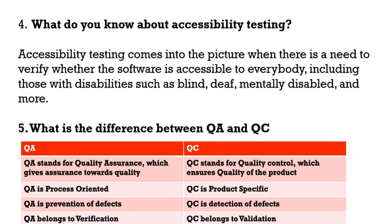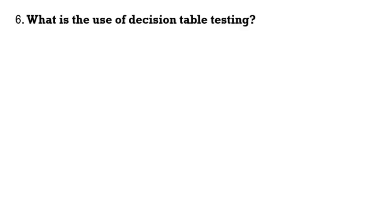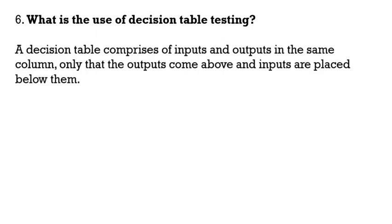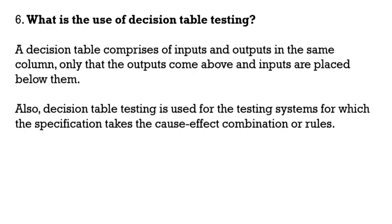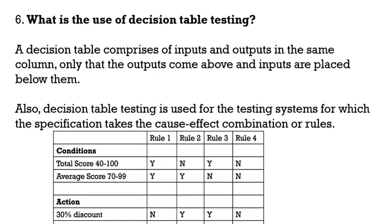The sixth question is: what is the use of decision table testing? A decision table comprises inputs and outputs in the same column, where outputs come above and inputs are placed below them. Decision table testing is used for testing systems where the specification takes cause-effect combinations or rules. A decision table looks like it has a set of conditions and a set of actions, and it also contains certain rules — Rule 1, Rule 2, and so on.